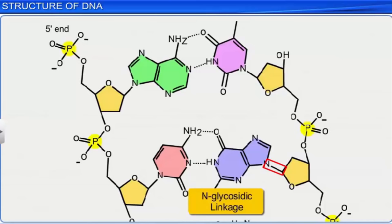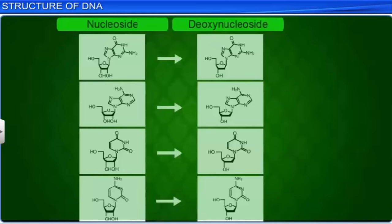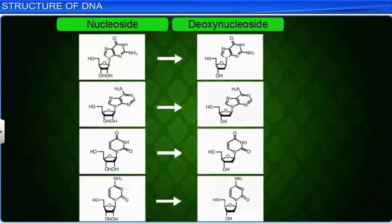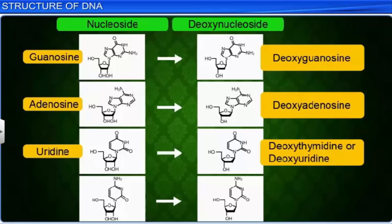Through an N-glycosidic linkage, a nitrogenous base is linked to the pentose sugar, forming a nucleoside, which can be guanosine or deoxyguanosine, adenosine or deoxyadenosine, uridine or deoxythymidine, and cytidine or deoxycytidine.